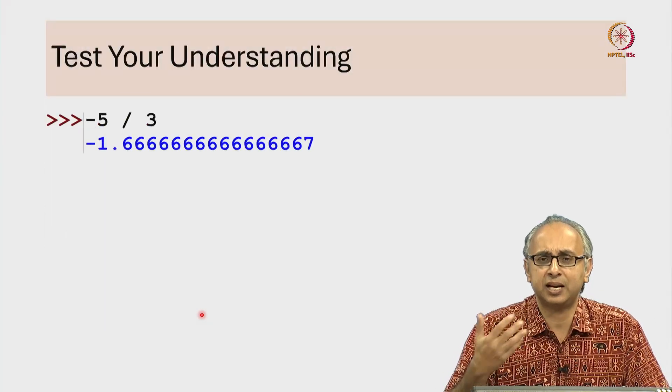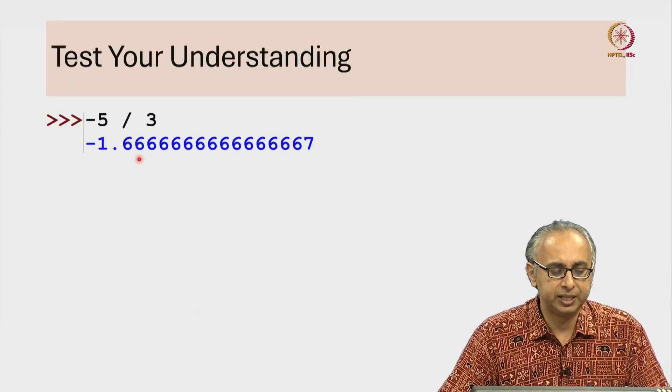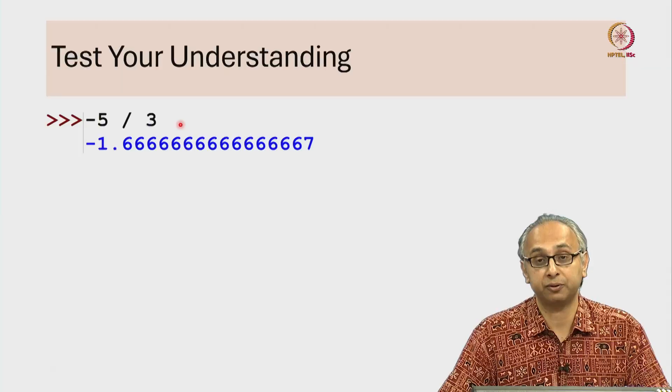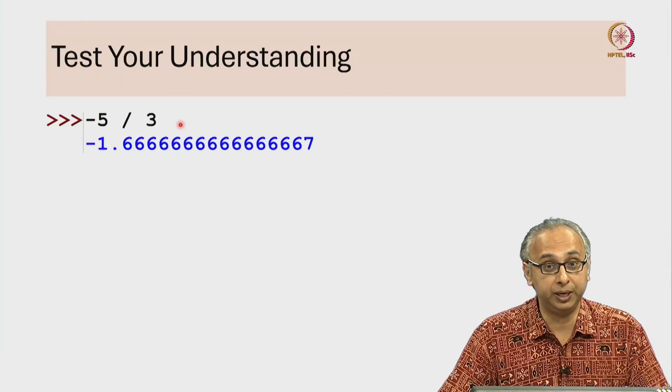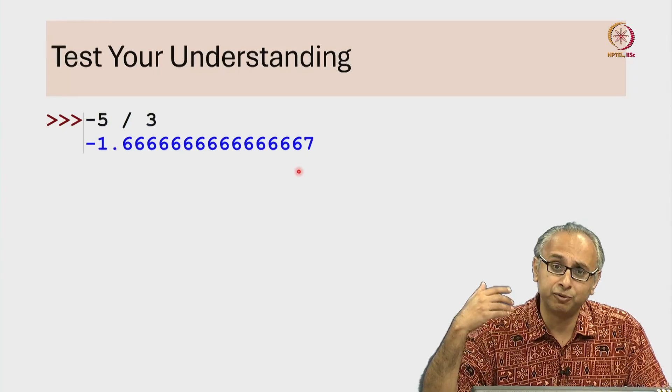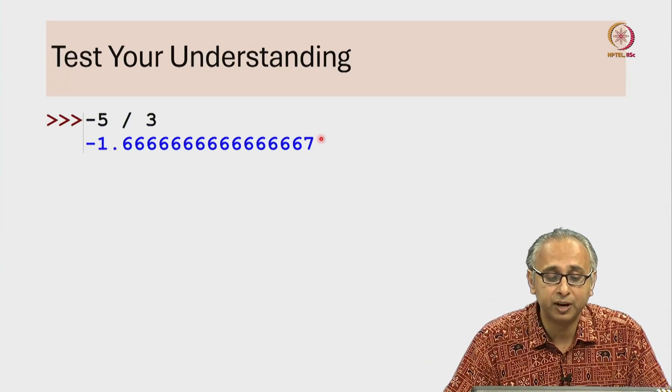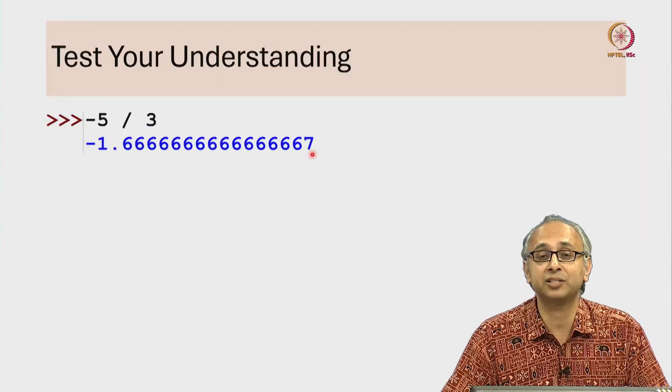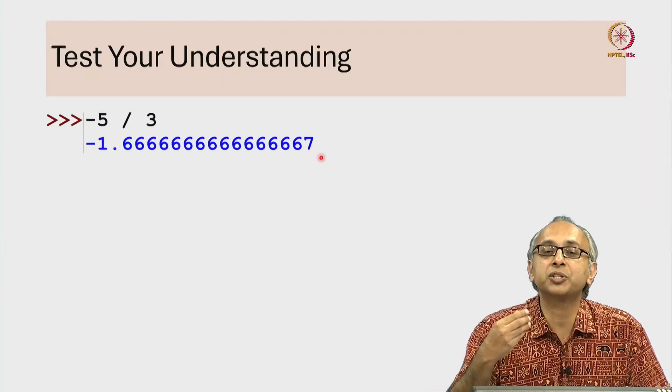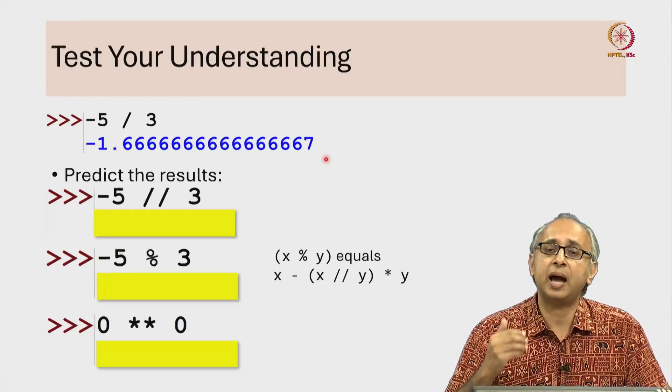So let's test our understanding with what we have learnt. So firstly in the REPL if I say what is minus 5 true division 3 that is of course minus 1.66666 repeating forever. Observe that Python finally truncates this with a 7. So you can see that this is an approximation.